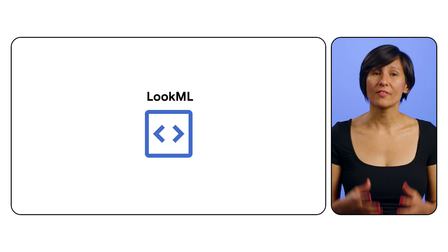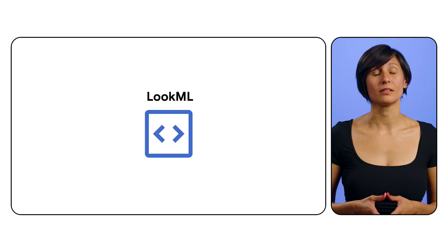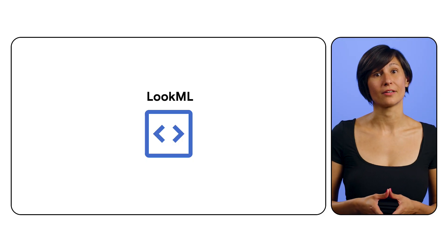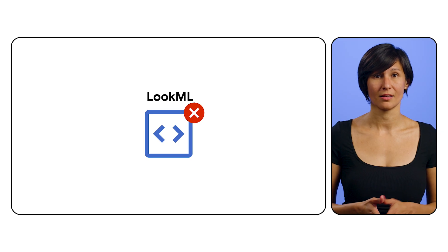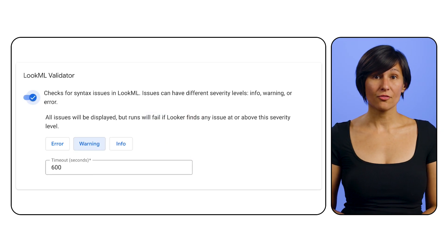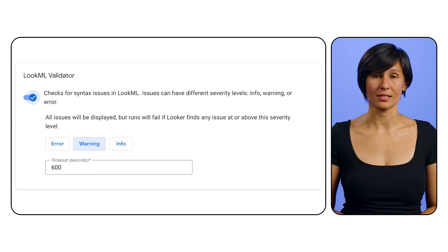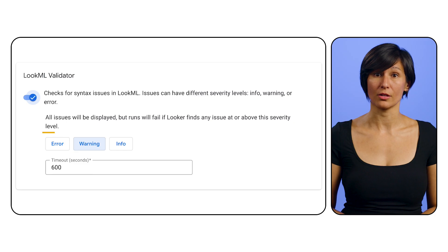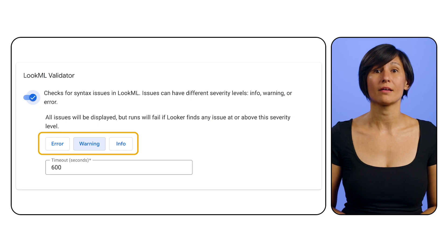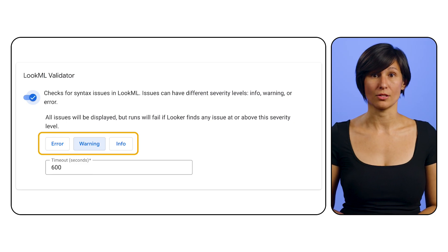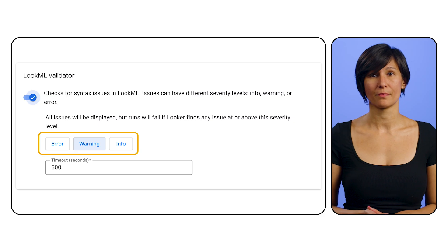When you're writing LookML, either in the Looker UI or elsewhere, the LookML validator checks for syntax errors. With the configurable Looker CI version of the validator, you can set the severity to alert you of info, warning, and error-based issues so you can fix them before submitting a pull request.